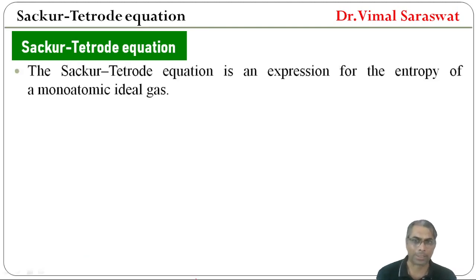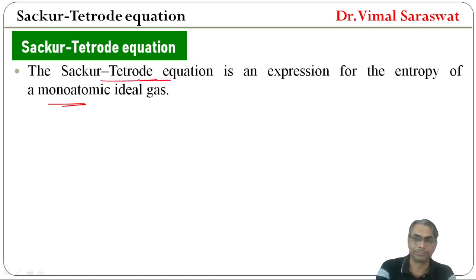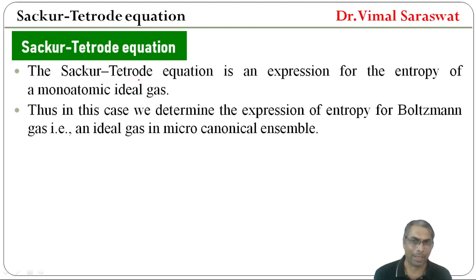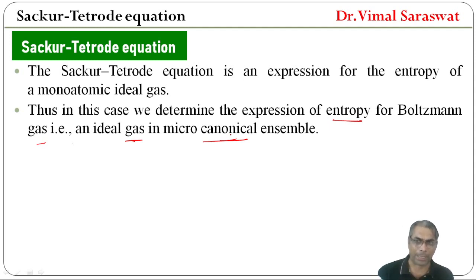The Sackur-Tetrode equation is an expression for the entropy of a monatomic ideal gas. We determine the expression of entropy for a Boltzmann gas, that is an ideal gas in the micro-canonical ensemble. The resulting expression is the Sackur-Tetrode equation.